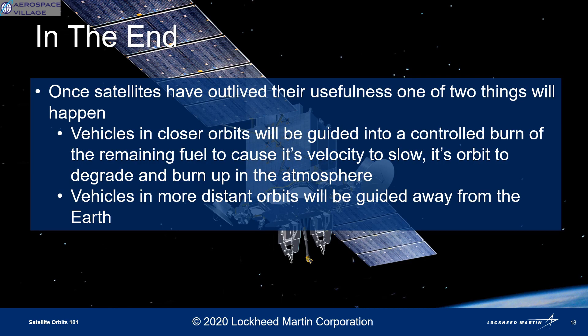Sadly, all satellites don't go to heaven. In the end, when a satellite has come to the end of its usefulness, the satellites in lower orbits will be put into a controlled fuel burn and put on a course to burn up in the atmosphere. The ones in orbits further out will be guided away from Earth into the expanse. Hopefully this discussion has scratched the surface of orbital terminology for you and you've learned a couple of new things. Thanks for your time and enjoy the rest of the conference.